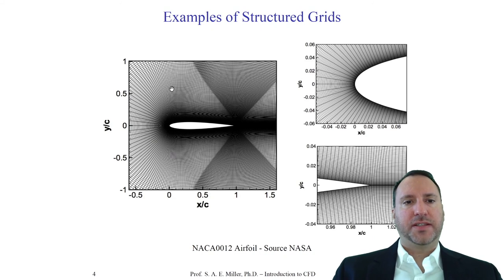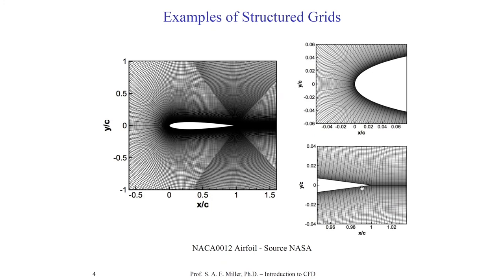The 12 percent thickness occurs in the y/c direction at approximately x/c equals 0.3. You can see the grid lines going around the airfoil with a very regular structure. There are two zoomed-in views on the right showing the leading and trailing edges. The grid points have a very regular distribution and all lines make regular paths through the global grid in the so-called xi and eta directions. The trailing edge is at x/c equals one, y/c equals zero. Grid points are highly clustered near the wall to resolve the turbulent boundary layer.